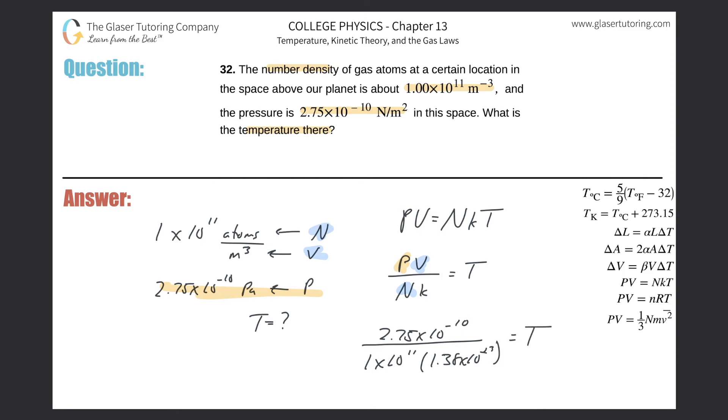And when we do that, we will get our temperature in Kelvin. So just simply take out the calculator. So there's 2.75×10^-10, divide that now by, in parentheses, 1×10^11 multiply that by 1.38×10^-23, and we get a value here of about 199. All right, so this is about 199 Kelvin.